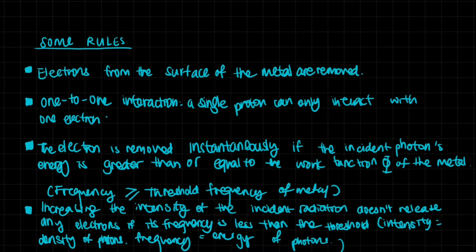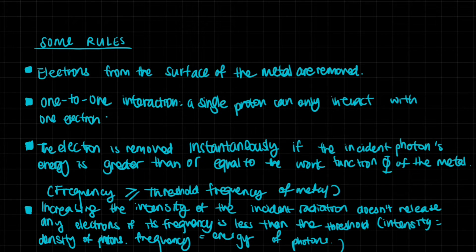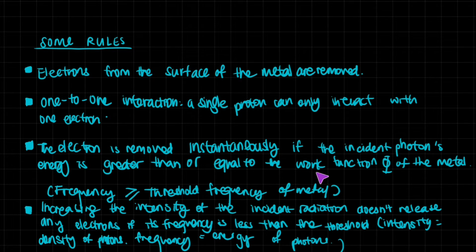A one-to-one interaction occurs: a single photon can only interact with one electron. The electron is removed instantaneously if the incident photon's energy is greater than or equal to the work function. If you have an energetic enough photon, you don't need to wait — it happens immediately. This also means the frequency must be greater than or equal to the threshold frequency, which directly relates to the work function.